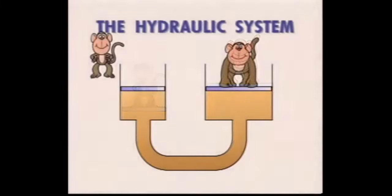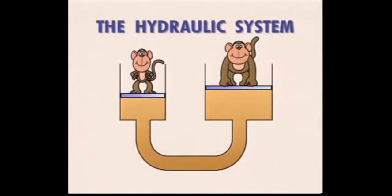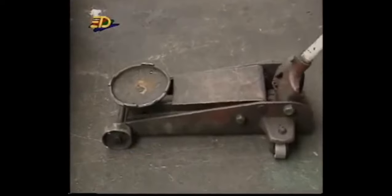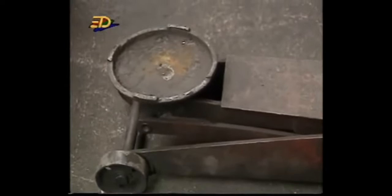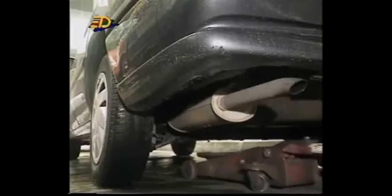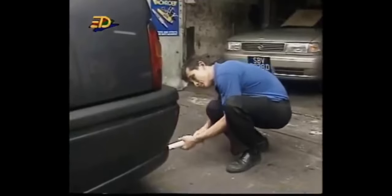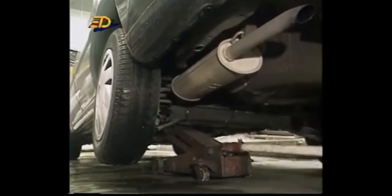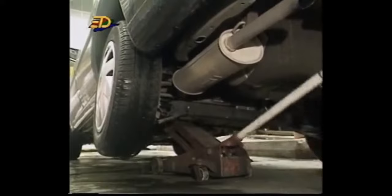Note that the small piston has to move a larger distance than the large piston. In most cases, oil is used as the hydraulic liquid, as it can lubricate the moving parts of the machine as well. The hydraulic principle is used in many devices, like the hydraulic jack used for lifting cars at the service station. Thanks to the hydraulic jack, lifting a car for servicing is no longer a problem.